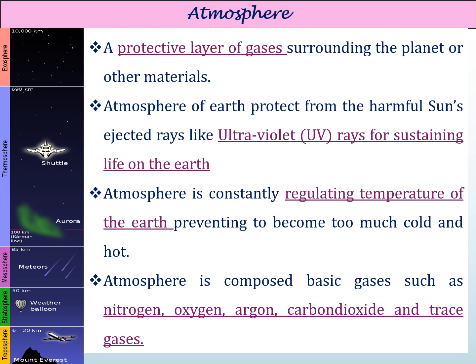Moving on to a detailed explanation of the spheres, let's first talk about the atmosphere. You can see a figurative form of the atmosphere here. The atmosphere is a protective layer of gas that surrounds the planet and other bodies in our solar system. There is atmosphere around earth, Jupiter, Neptune, and Saturn as well.